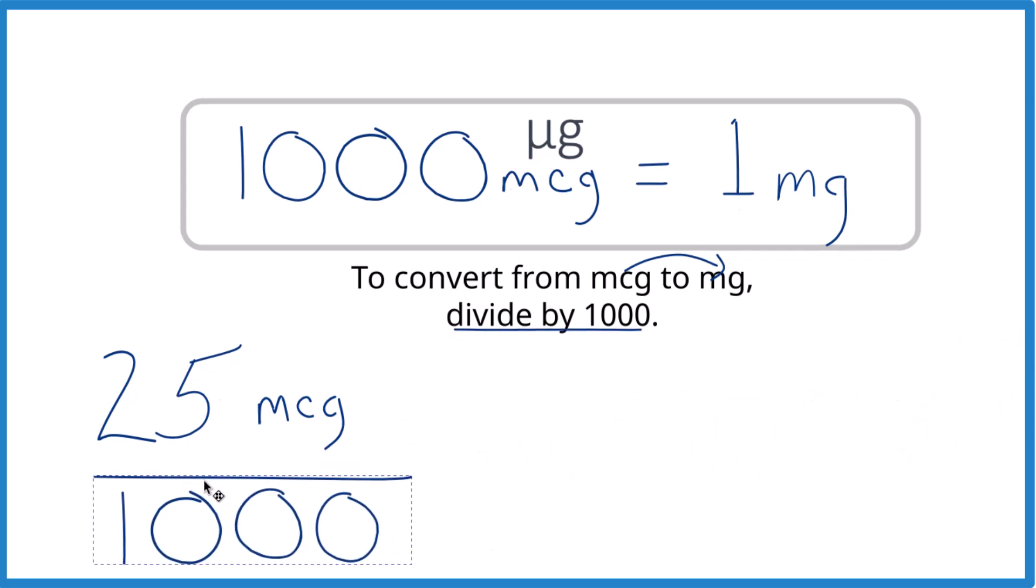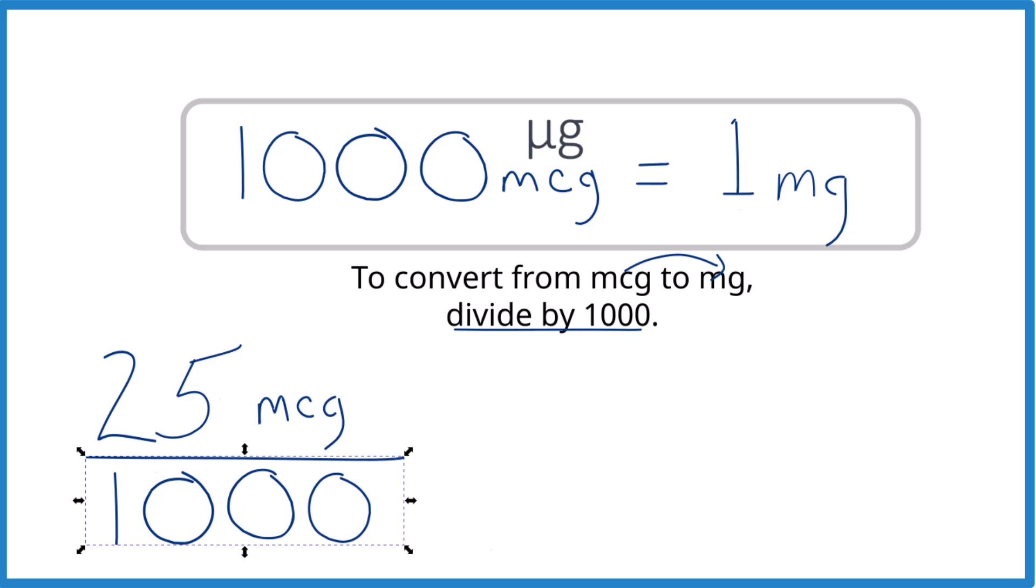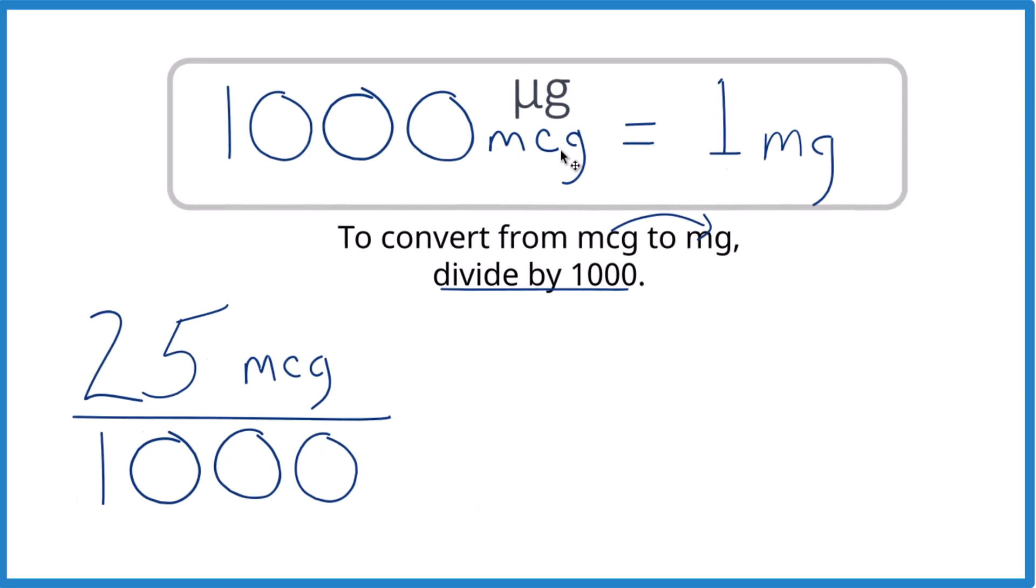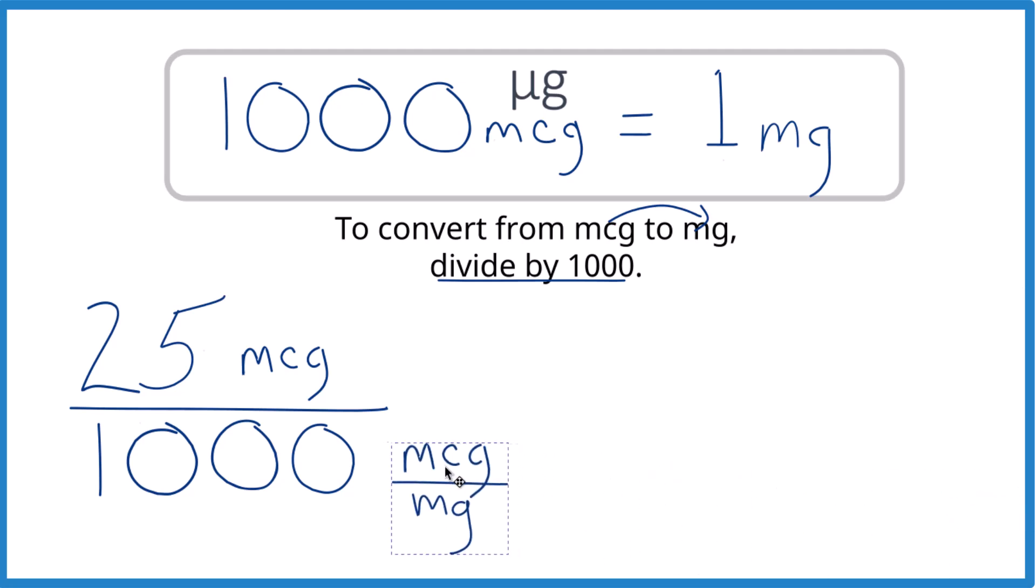So 25 micrograms divided by 1,000. Remember that's 1,000 micrograms per milligram. We can write our units here, which will be helpful in just a minute.